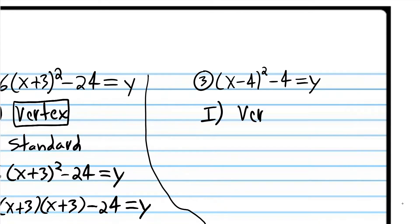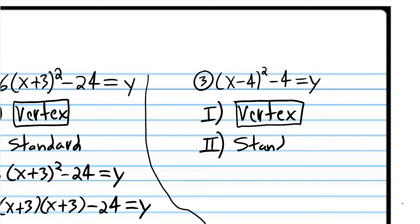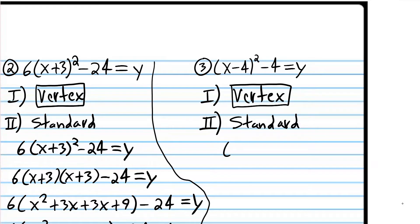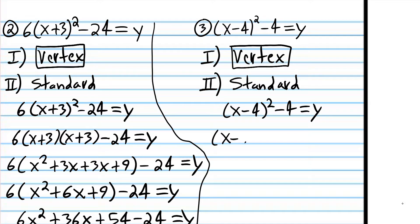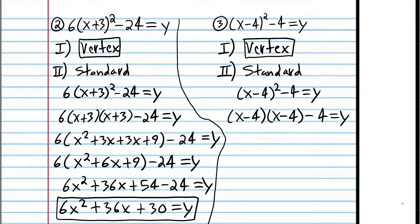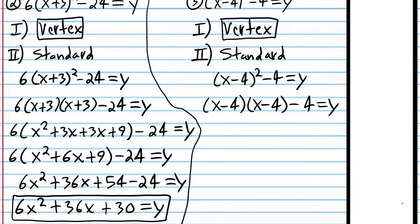Step one is to identify the form that it's already in — vertex form. Then we're going to change to standard form. To do that, I'm going to expand the power expression using FOIL: x times x is x squared, x times negative 4 is negative 4x, negative 4 times x is negative 4x, and negative 4 times negative 4 is positive 16.